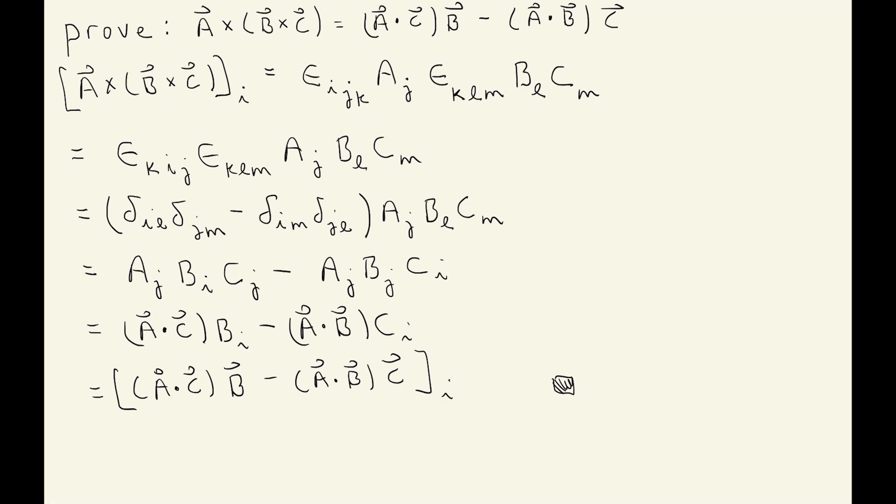Let me summarize the main steps. One: to prove a vector identity, prove it for an arbitrary component — here the i-th component. Two: replace cross products using the Levi-Civita symbol. Three: spin the indices so you're contracting the first index of the Levi-Civita symbols, then use the identity relating the contraction of one index to the difference of products of Kronecker deltas. Four: contract the Kronecker deltas against the vector components. Finally, recognize dot products — and cross products — when you see them.